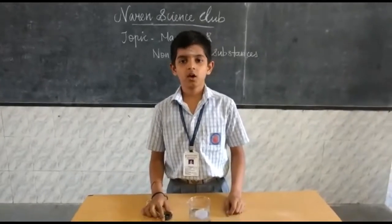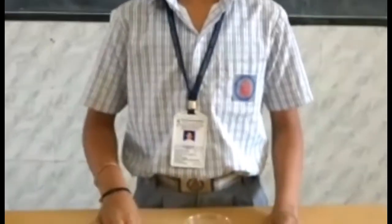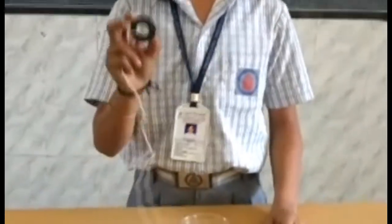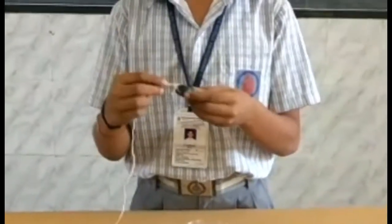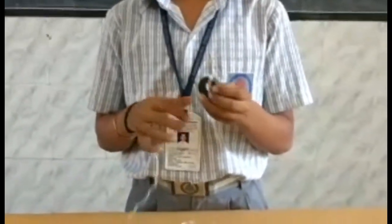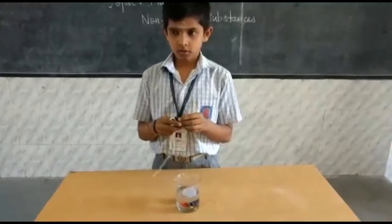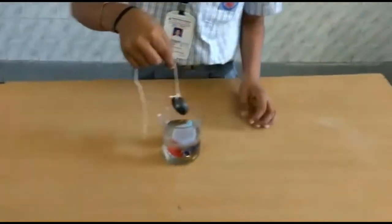What is magnetic and non-magnetic substances? Take a magnet. Tie it in a thread. Dip the tied magnet into the glass of water.